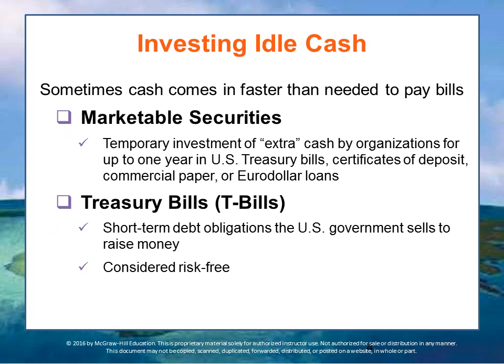As companies sell products, they generate cash on a daily basis, and sometimes cash comes in faster than it's needed to pay the bills. Organizations often invest this extra cash for periods as short as one day overnight, or for as long as a year until it is needed. Such temporary investments of cash are known as marketable securities.